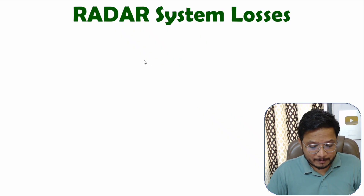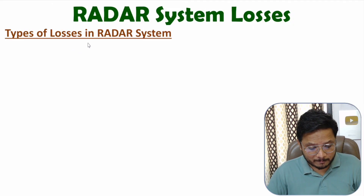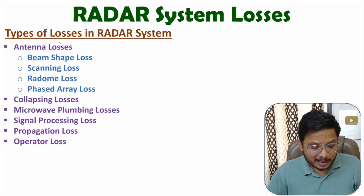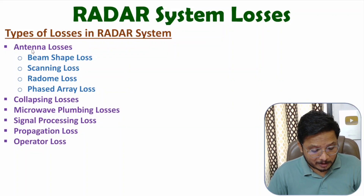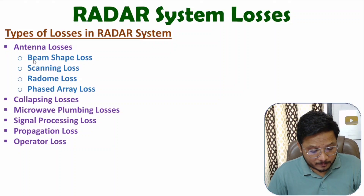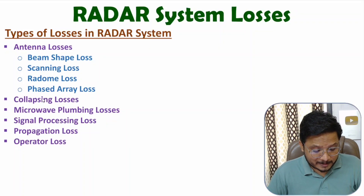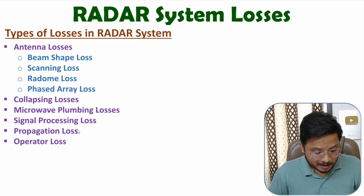Let me explain how many types of losses are there with radar systems. In general, you can classify radar system losses into these categories: the first one is antenna losses, which includes beam shape loss, scanning loss, radome loss, and phased array loss. The second category is collapsing loss. Then we have microwave plumbing losses, signal processing loss, propagation loss, and finally, operator loss.